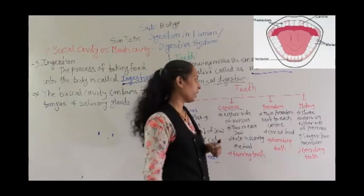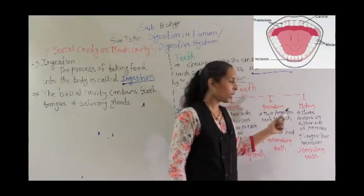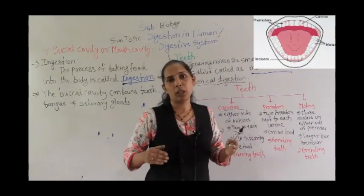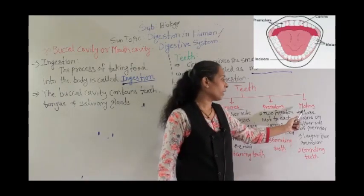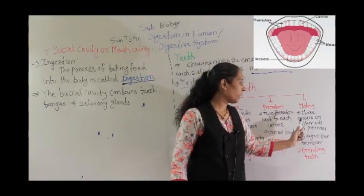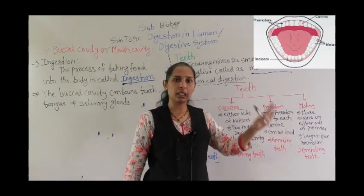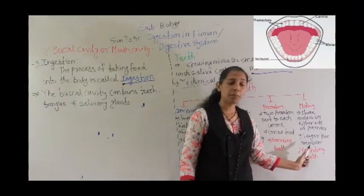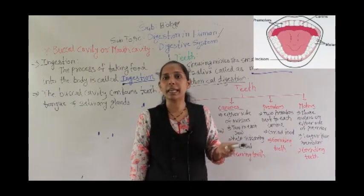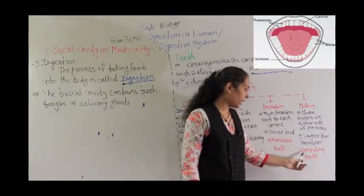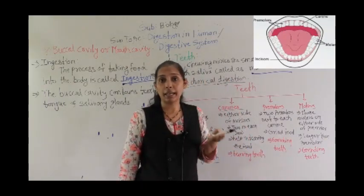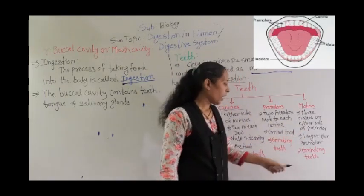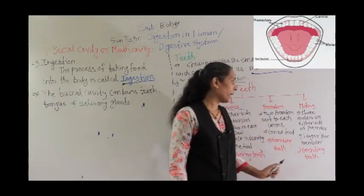The last type of teeth is molars. There are three molars on either side of the premolars. Molars are larger than premolars. They also help to grind and crush the food, and their surface is also broad and flat. That is why molars are also called grinding teeth.